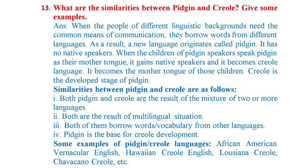Similarities between pidgin and creole are: I. Both pidgin and creole are the result of the mixture of two or more languages; II. Both are the result of a multilingual situation; III. Both borrow words and vocabulary from other languages; IV. Pidgin is the base for creole development. Some examples of pidgin-creole languages are African American Vernacular English, Hawaiian Creole English, Luciana Creole, Chavacano Creole, etc.